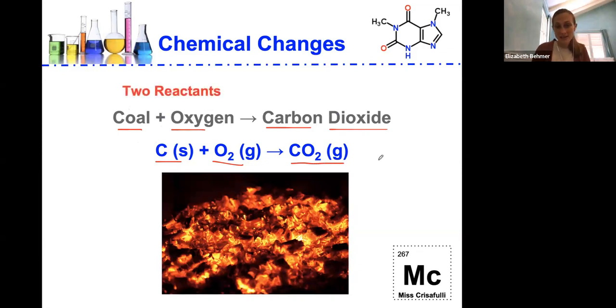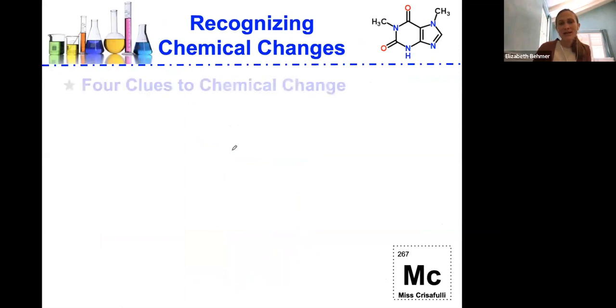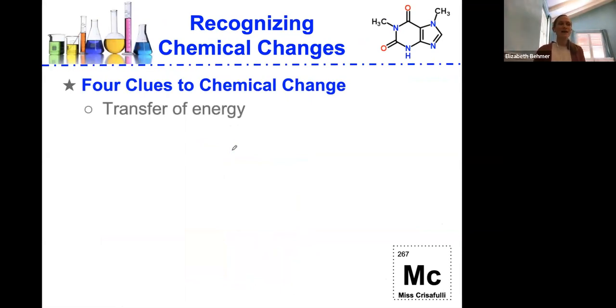The two reactants are the coal and the oxygen, which will be broken down into carbon and O2 elements, and the one product that's being formed at the end is carbon dioxide. But recognizing chemical changes, there's four clues to recognize a chemical change, and you'll need this to complete that physical and chemical changes Google activity that you're working on for this unit.